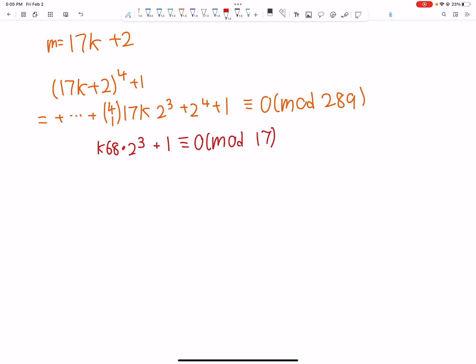And now we just simplify this. We divided by 17, so I should have 4k here. So now 4 times 8, 32. That's 15 mod 17. We have 15k plus 1 is 0 mod 17.